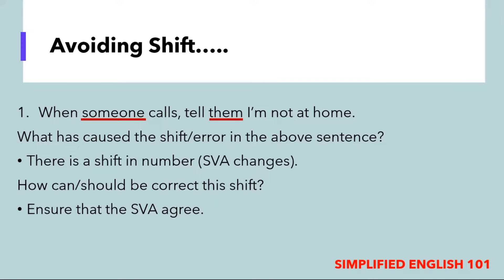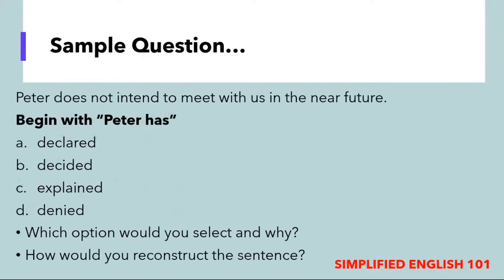Let us now look at a sample question. This is the way sentences are set up in the paper one exam for English where construction shift items occur. You will get a sentence, an instruction of how to recreate it, plus answer options. The sentence reads: 'Peter does not intend to meet with us in the near future.' The instruction says to begin the sentence with the phrase 'Peter has.' The options are: A — declared, B — decided, C — explained, and D — denied. Which option would you use and why, and how would you reconstruct the sentence?